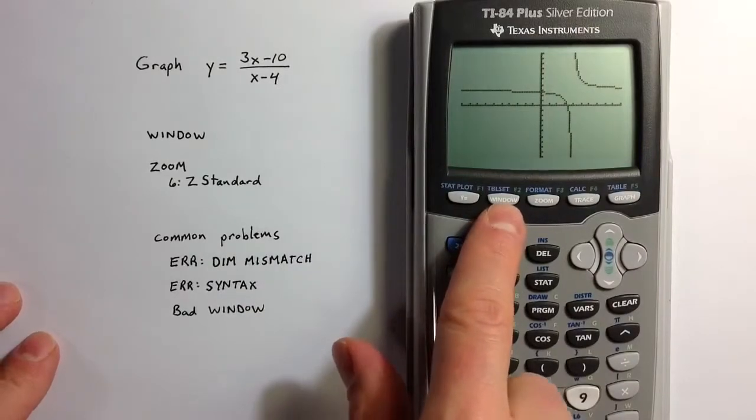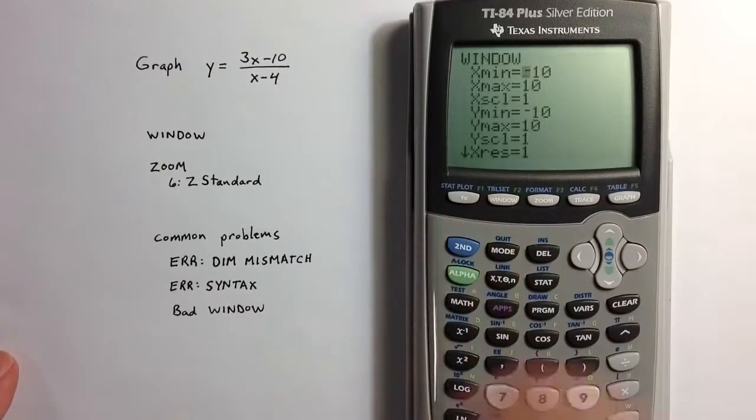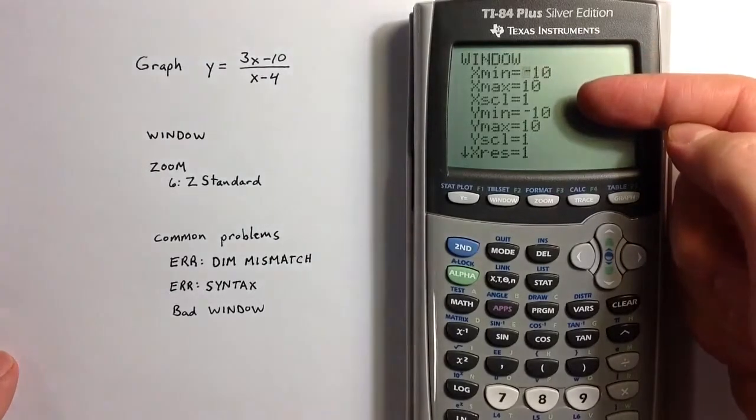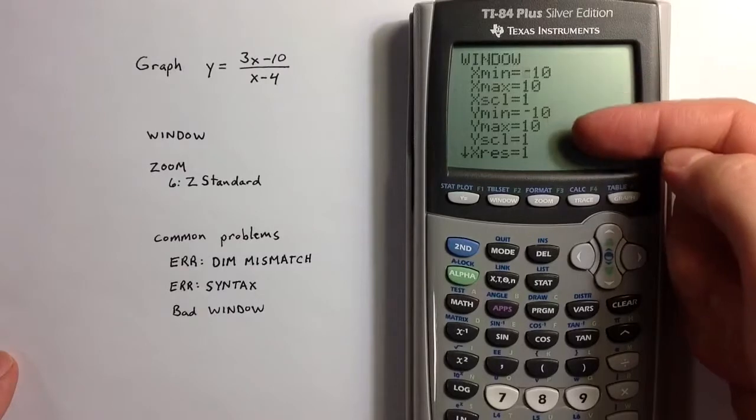If you go to the window, we can see that the calculator is displaying x values that run from negative 10 to 10, and y values that run from negative 10 to 10.